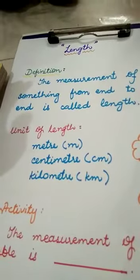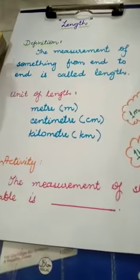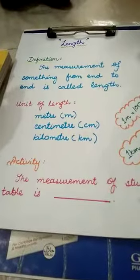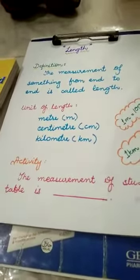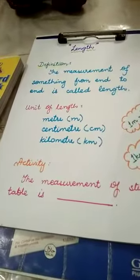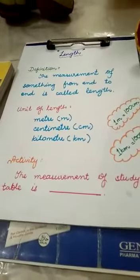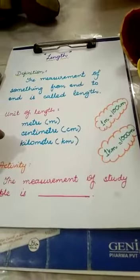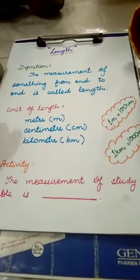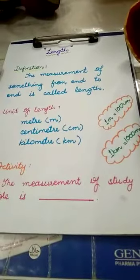Today I have a plan and activity for you and it is actually very easy — you can do it at home. You have to measure your study table, almirah, dining table, or any object you want. Measure something in centimeters or in meters and write it down in your notebook. The units of length are meter, centimeter, and kilometer. One meter is equal to 100 centimeters, and one kilometer is equal to 1000 meters.